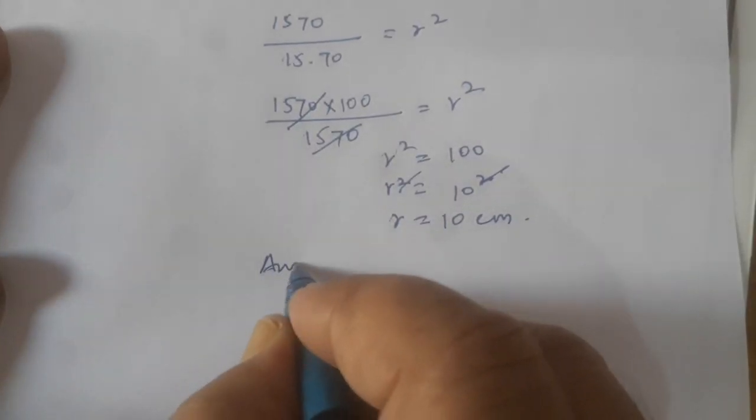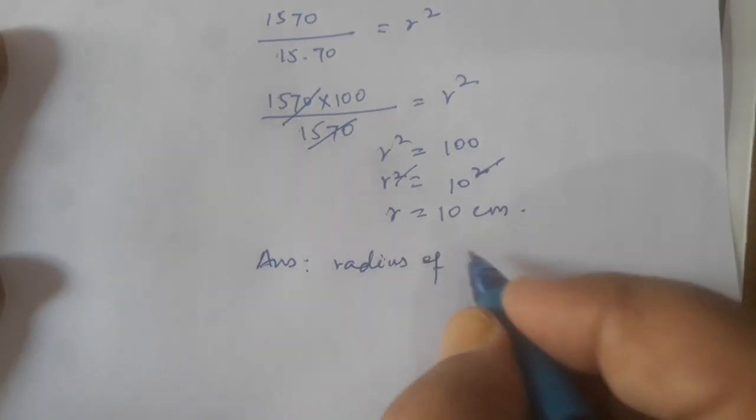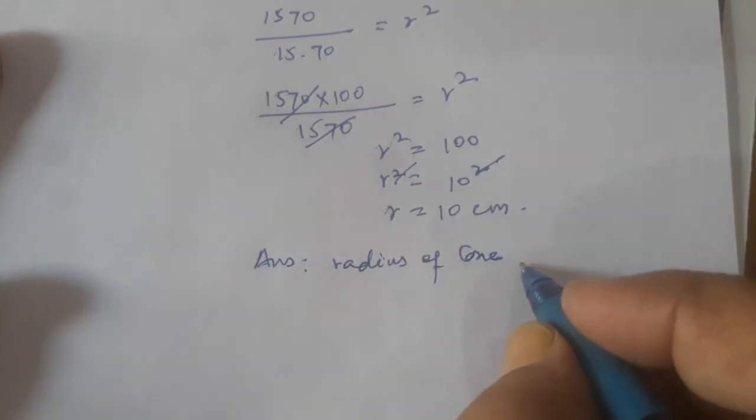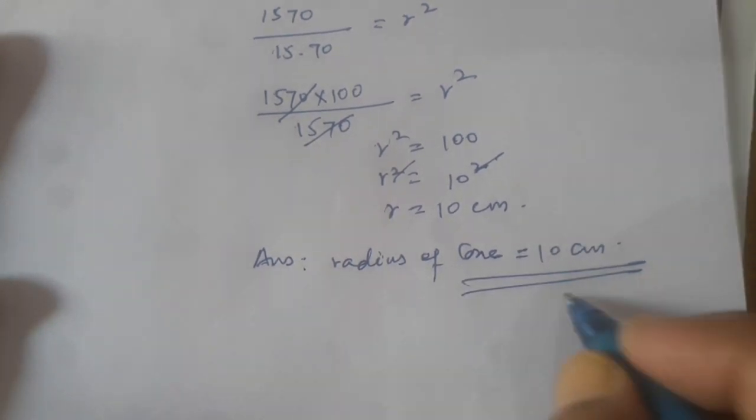This is the answer. Answer: radius of cone = 10 cm. This is the answer.